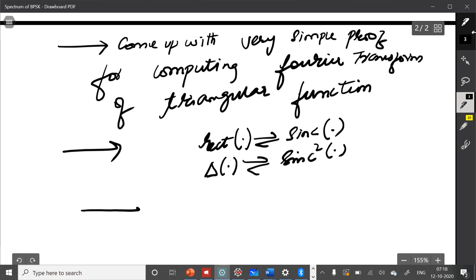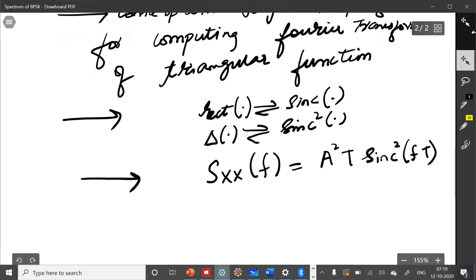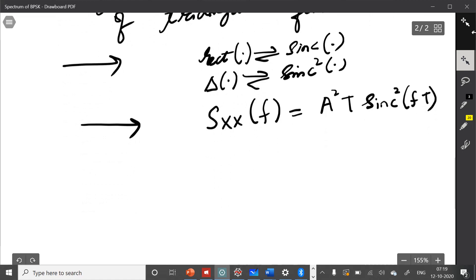Now, in this case, the Fourier transform of this triangular autocorrelation function will be A square T sinc square fT. This you have to work out. This is basically part of your Fourier transform, you might have done it there. I don't want to spend that time here. It's very simple. Just go back to your Fourier transform basic lectures, and using some properties, you can prove it in a very simple way.